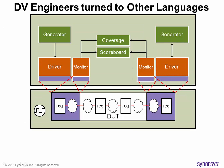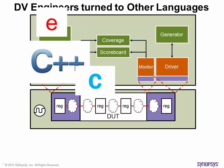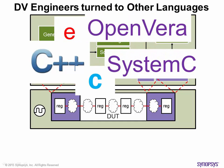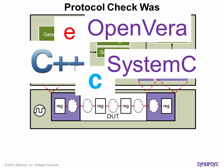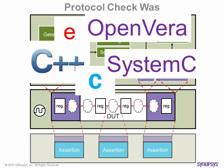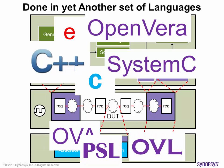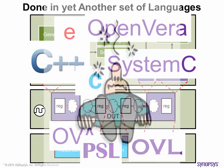Verilog and VHDL are simply not suitable for these verification needs. To overcome the deficiencies of Verilog and VHDL, design verification engineers turn to other languages for functional verification. For protocol verification, design engineers turn to yet another set of languages. With these languages, short-term needs of design verification were met, but long-term code reuse and code maintenance became a nightmare.